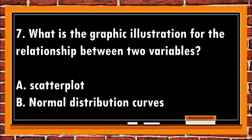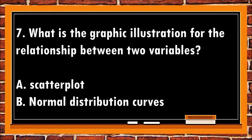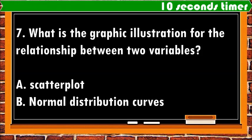7. What is the graphic illustration for the relationship between two variables? a. Scatterplot. b. Normal distribution curves.